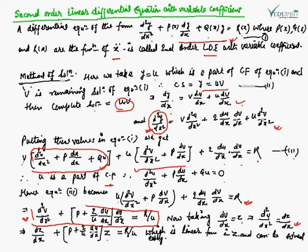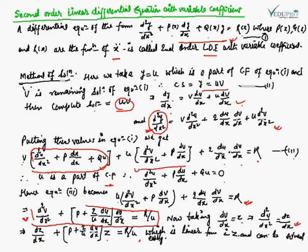This is a linear differential equation in z. We can solve it using the standard method: z·IF = ∫Q·IF dx, where IF is the integrating factor. From this we can find z, then v, and hence the complete solution y = u·v.